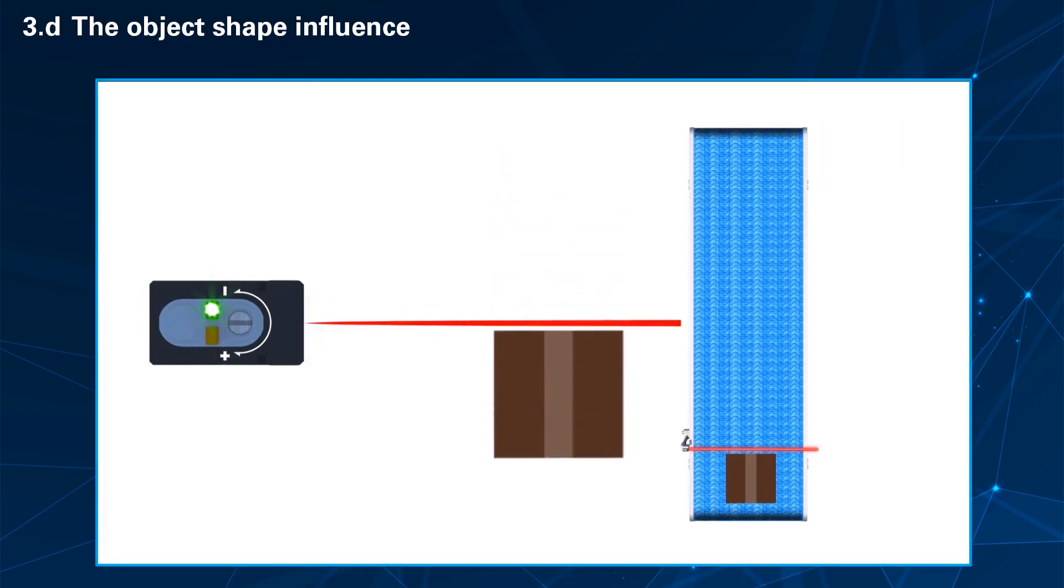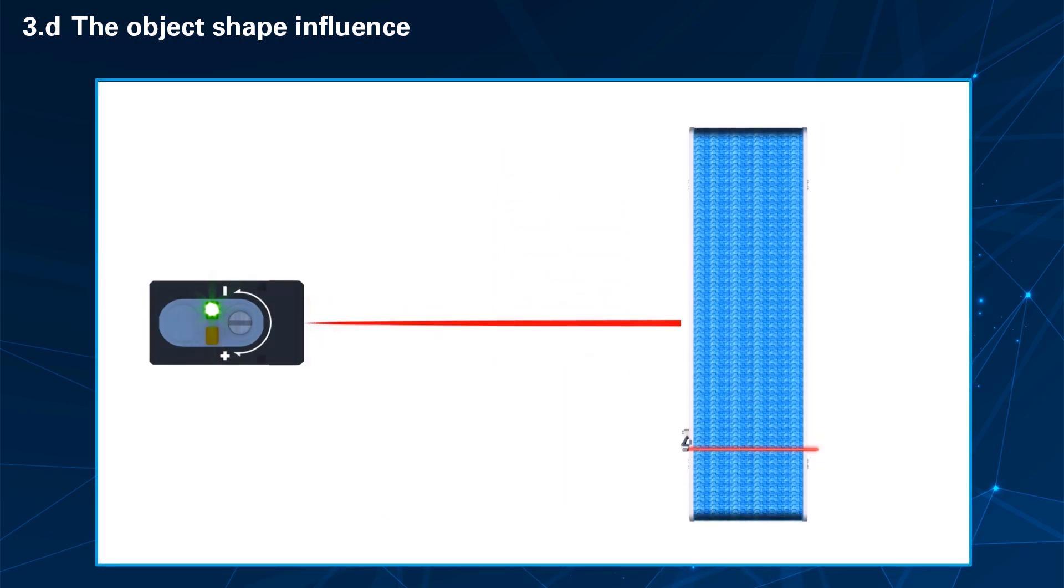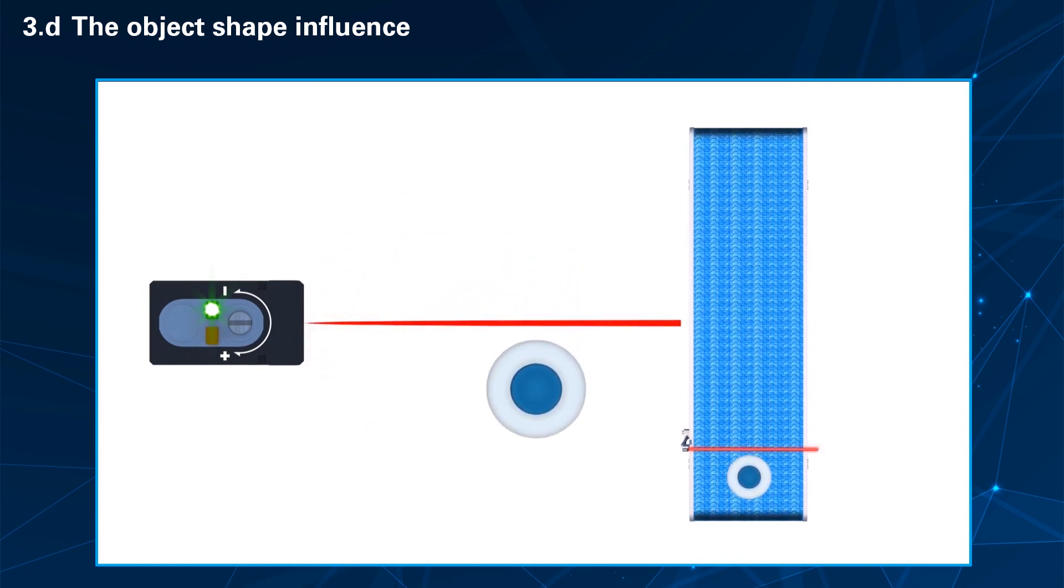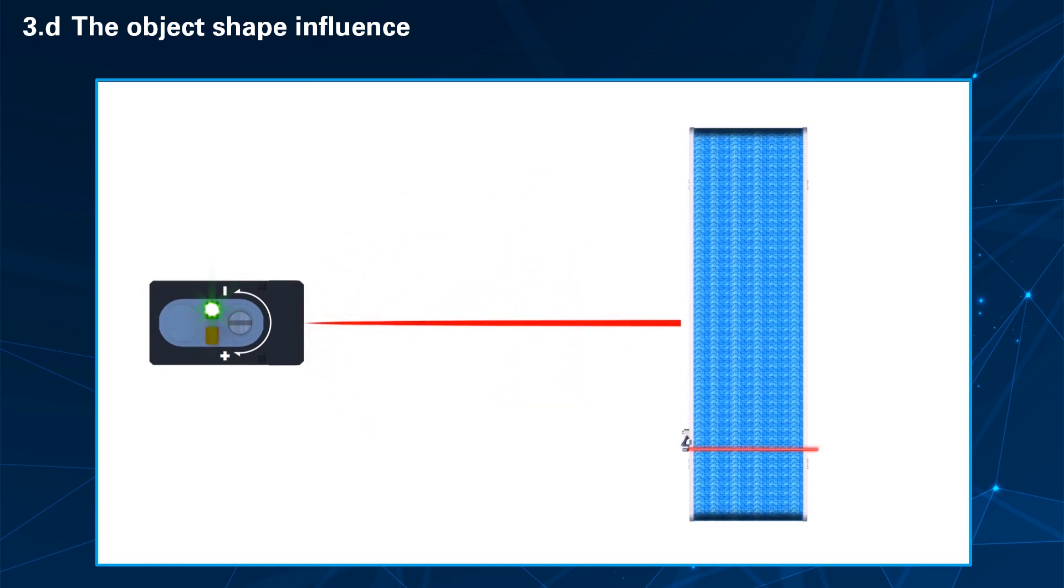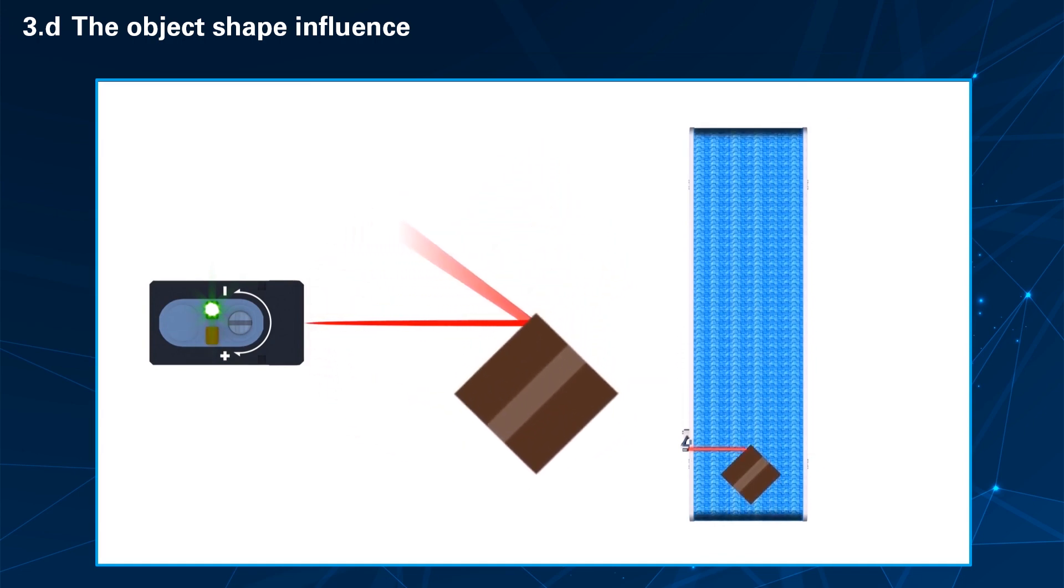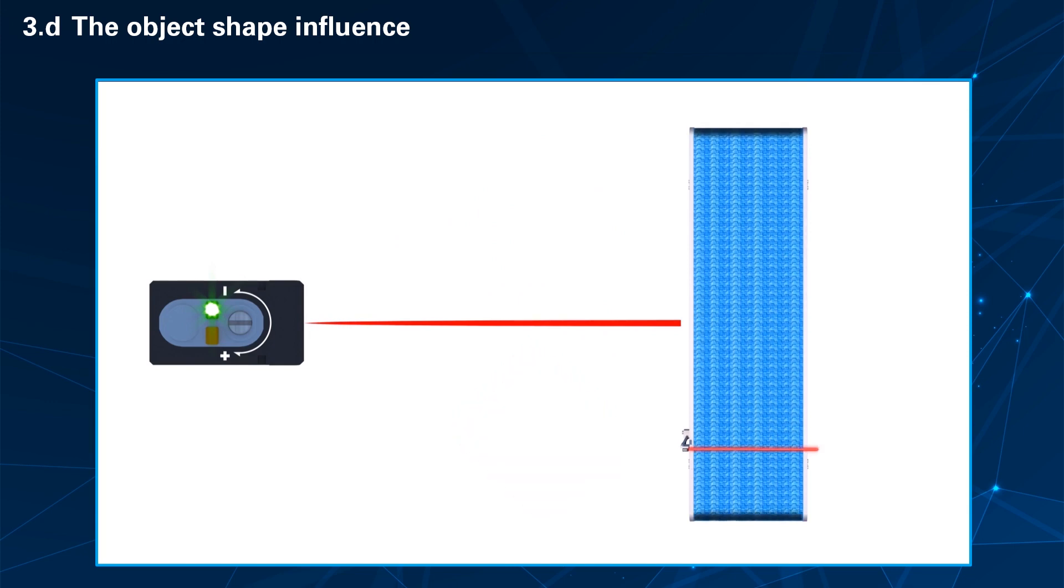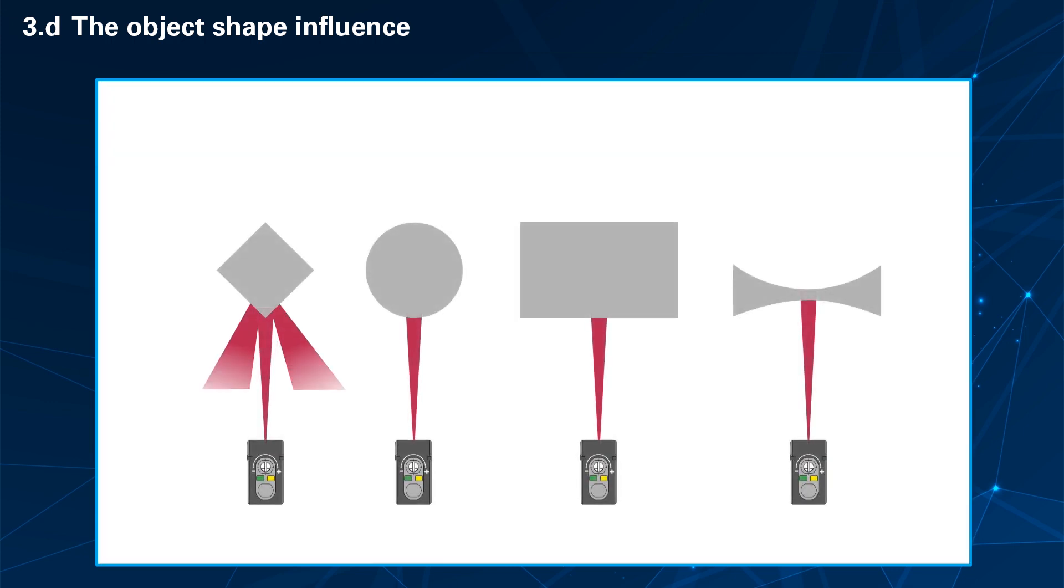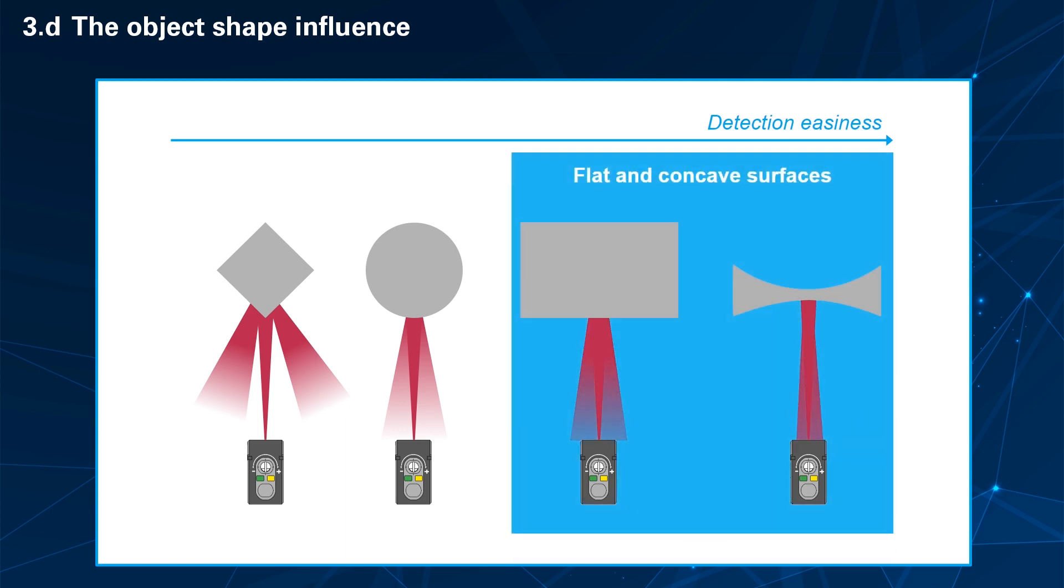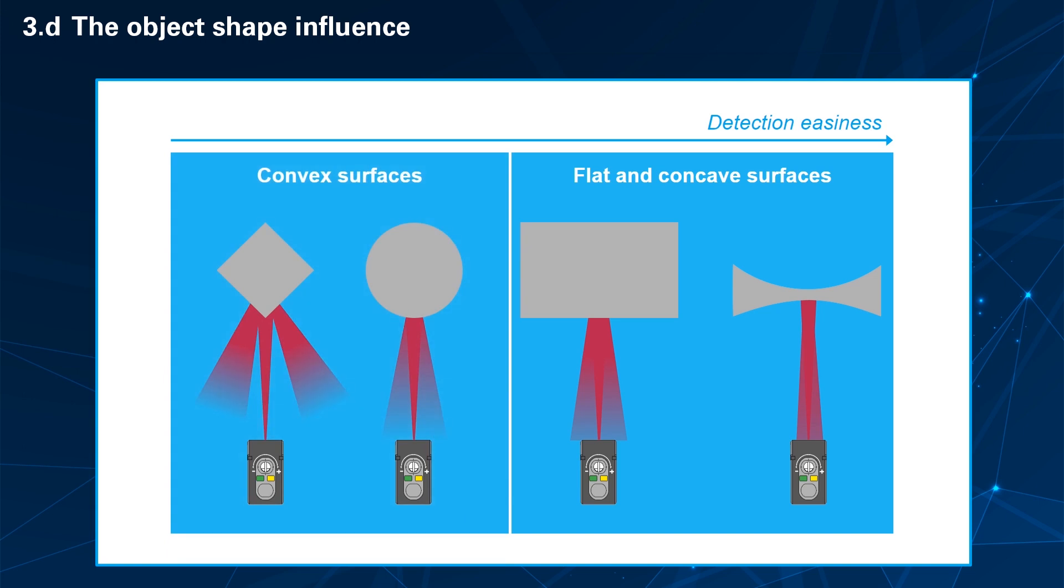The object's shape can influence the direction where the beam is reflected. If the phototransistor does not receive enough energy, the object won't be detected. To be detected, the object shall reflect and diffuse enough energy to the photoelectric sensor. Regarding detection easiness, flat and concave surfaces are more favorable than convex surfaces.